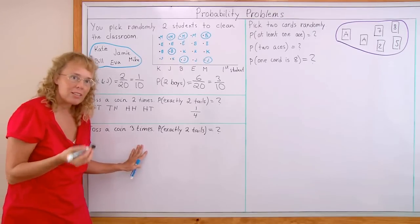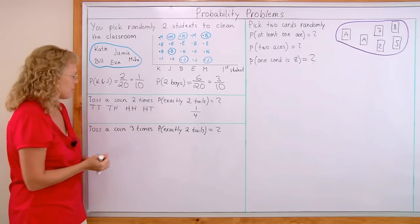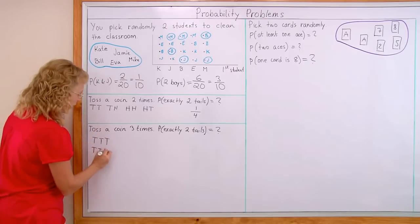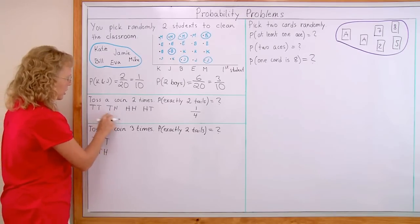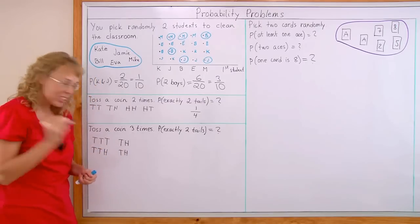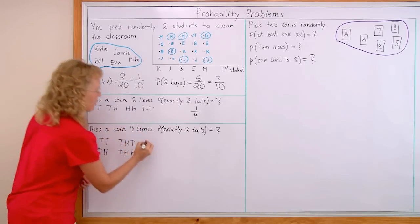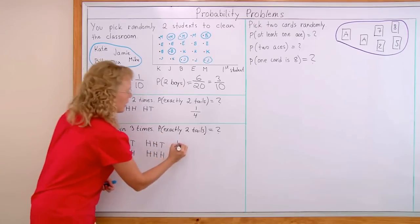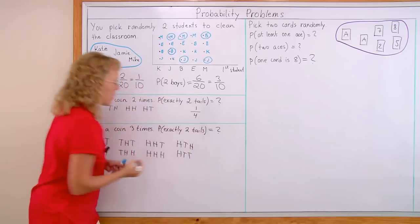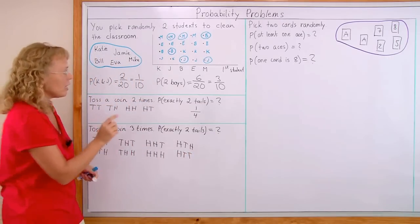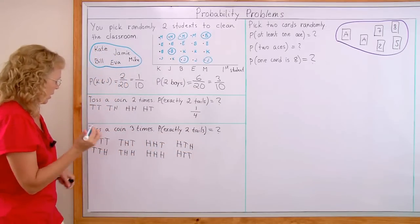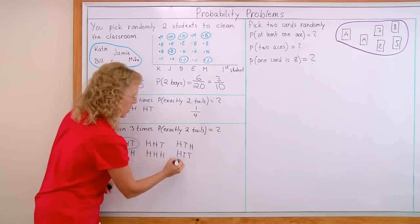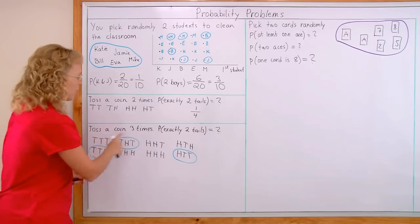Now toss a coin 3 times — what's the probability of getting exactly 2 tails? We list all possible outcomes: tails-tails-tails, tails-tails-heads, tails-heads-tails, tails-heads-heads, heads-heads-tails, heads-heads-heads, and the remaining combinations. Now I have all 8 possible outcomes. Finding the favorable ones — exactly 2 tails — there are 3 favorable outcomes, so the probability is 3 over 8.